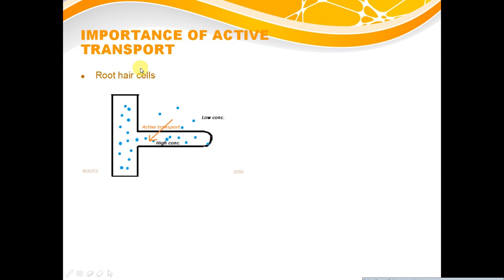Lastly, you need to know the importance of active transport, and I'm going to use root hair cells as an example. Let's say the right side of the diagram where this extension is extending into is the soil, and the left side is the roots. This black outline structure is the root hair cell, which contains nutrients upon the absorption of nutrients in the soil. That's represented by these blue dots. You can see that there are much more of these blue dots inside of the root hair cells already, so there's a higher concentration inside the cell than the outside.